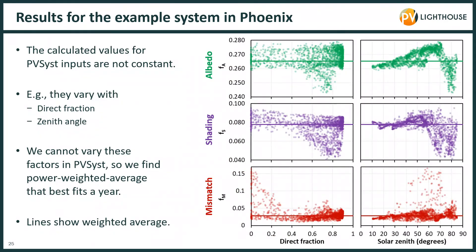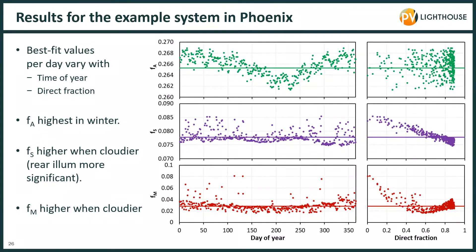Here are some results. We plot the three values FM, FS and FA for every hour of the year against the direct fraction — which is 0 on a fully cloudy day and 0.9 on a very sunny day — and against the solar zenith angle. You can see some trends but most importantly a large degree of scatter. A single value of FA therefore won't provide an accurate value for PVSYST at all data points, but we can determine a power-weighted average that best fits the year, represented by those lines. Of interest is how those inputs vary with season — each data point represents a day, and we can see that the albedo factor in particular varies from summer to winter.